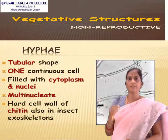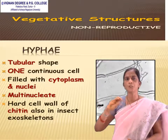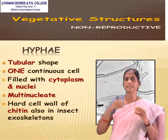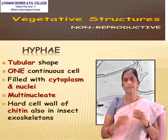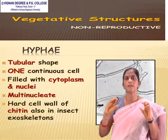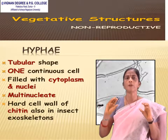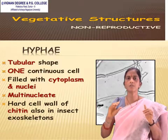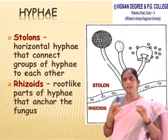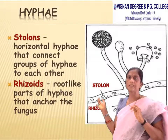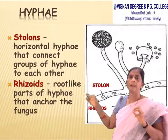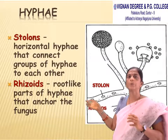Coming to the hyphae — hyphae are tubular in shape, continuous cells filled with cytoplasm and nuclei. They may be multi-nucleated. The cell wall is made up of chitin, also known as exoskeleton. Stolons are the horizontal hyphae that connect groups of hyphae to each other.